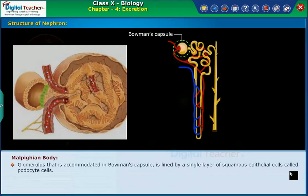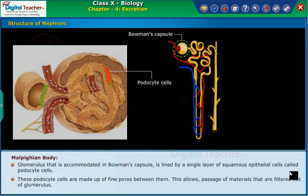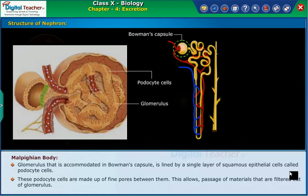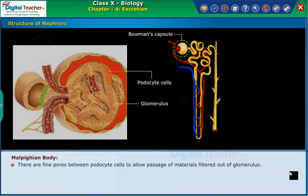The glomerulus, accommodated in Bowman's capsule, is lined by a single layer of squamous epithelial cells called podocyte cells. These podocyte cells have fine pores between them, which allow passage of materials that are filtered out of the glomerulus.